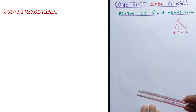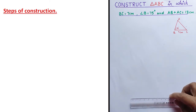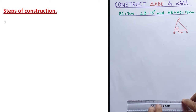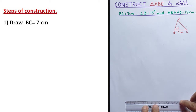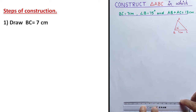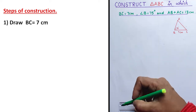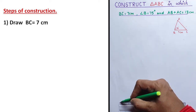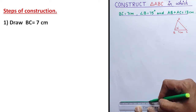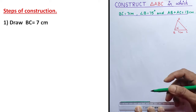For this, let's draw a line segment of length BC — that is the base. BC equals 7 centimeter.